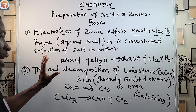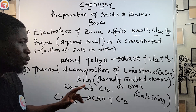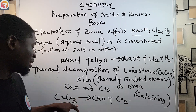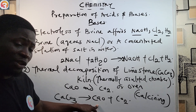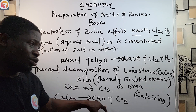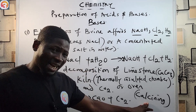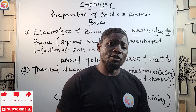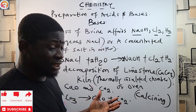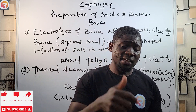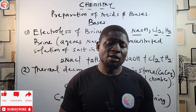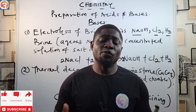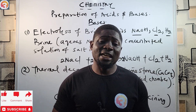The thermal decomposition of limestone gives us calcium oxide. When we burn calcium carbonate it gives us calcium oxide — and that process is called calcination. We have now seen some methods for preparing acids and some specific methods for preparing bases. Please like this video so other students can find and learn from it, subscribe to the channel, share the video, and I'll see you in the next episode.